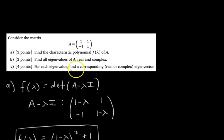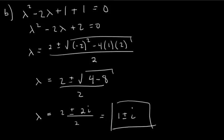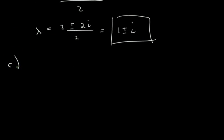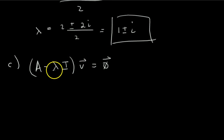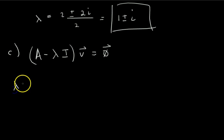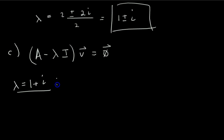Part C says: for each eigenvalue, find a corresponding eigenvector. It's the same exact process. We have to find a vector V that satisfies A minus lambda I times V equals 0 — in other words, a vector in the null space of A minus lambda I. Watch the previous videos in this series if you don't remember where this comes from. Remember, you have to do it for each eigenvalue. Let's pick the positive eigenvalue, lambda equals 1 plus i.